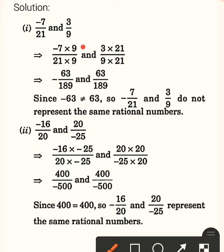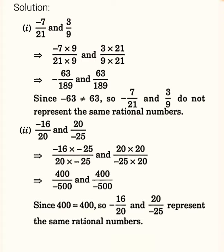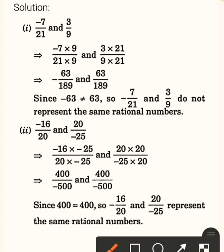Here, minus 7 into 9 gives the first numerator, and 3 into 21 gives the second numerator. So we have minus 7 into 9 on one side and 21 into 3 on the other, with denominator 21 into 9 for both.